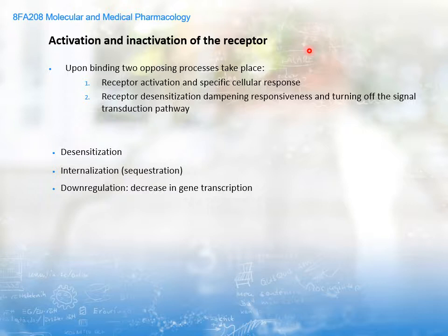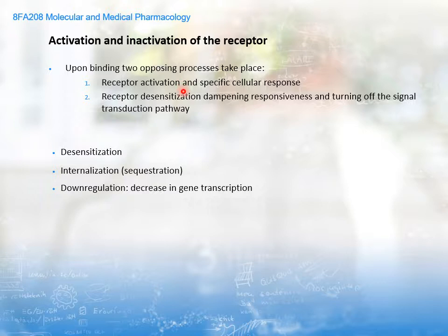Continuing to talk about activation and inactivation of the receptor, when ligand binding to the GPCR occurs there are two opposing processes. The first is receptor activation and the specific cellular response just described. The other, equally important, is desensitization of the receptor and the decrease in response upon activation — what I call the turning off of the signal transduction pathway. This turning off happens through three different avenues: desensitization (a fast response), internalization or sequestration, and down-regulation or decrease in gene transcription.